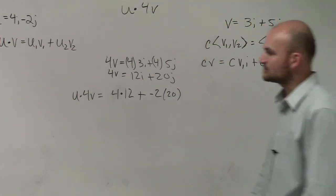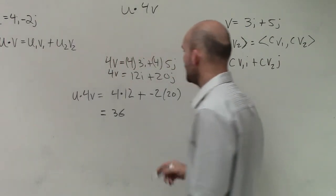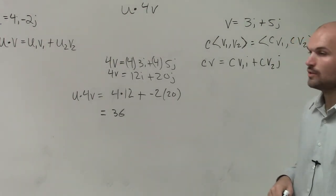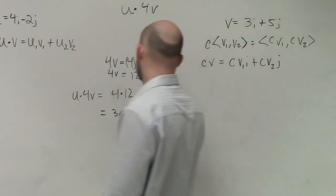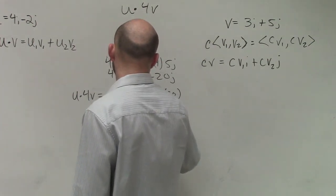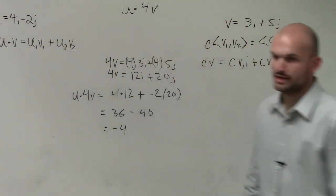So therefore, we have 4 times 12, which equals 48. And plus negative 2 times 20 is going to be negative 40. So therefore, you get negative 4.